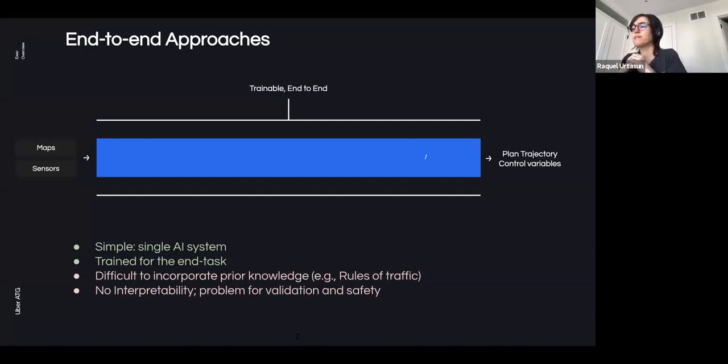A very popular approach in academia to autonomy is to train a neural network for the task of driving. The input to such a system is a set of sensor measurements, for example, radar or images, and the output is the information necessary for the self-driving car to drive. For example, steering command and acceleration. The advantage of such an approach is that it is very easy to get a prototype against a few lines of code. Furthermore, the system is trained for the end task, which is the task of driving.